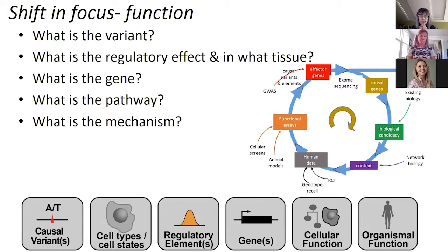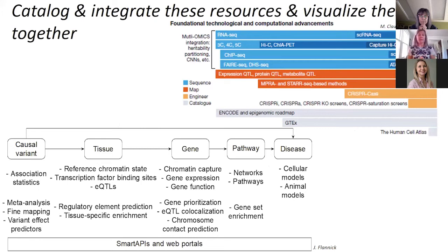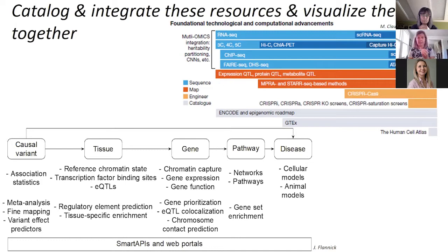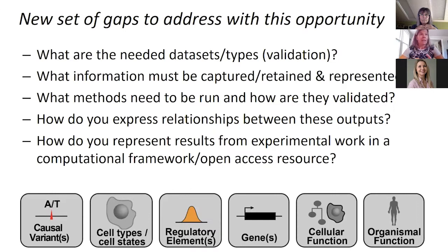Our goal with the portal over the coming years is to help you determine what is the variant, the gene, the pathway, and the mechanism of action. Technological and computational advancements in the field have made foundational resources available to help bring this to bear. However, we need to house, catalog, and integrate them into an easily accessible resource. That's really what Maria is going to focus on today — the accessibility of an integrated resource where all these things are together in a way you can visualize them.